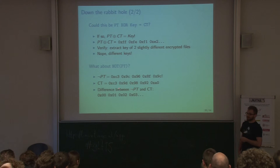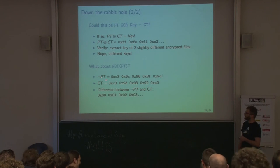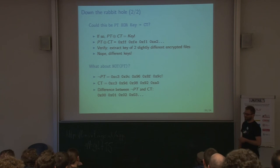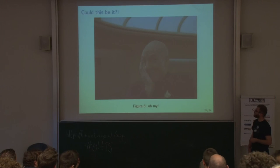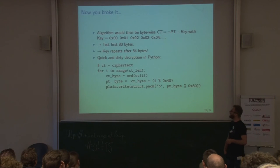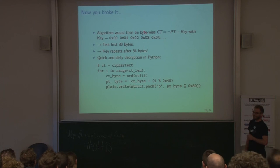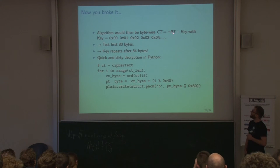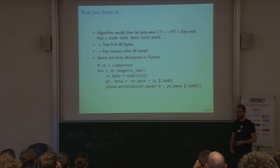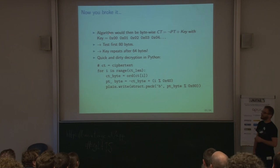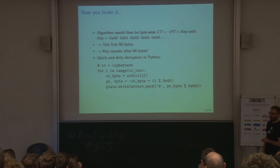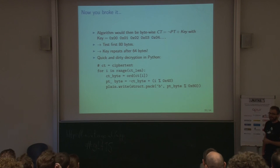So the assumption is that the algorithm encrypts as NOT(PT) plus some key. Testing the first 80 bytes — looks good, produces the same XML file we expect. And we see the key repeats after 64 bytes — it goes from 0x00 up to 0x40, then starts again. That's the decryption written in Python — it's four lines.